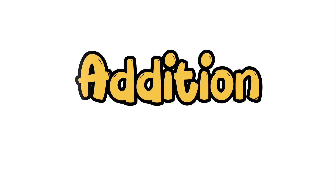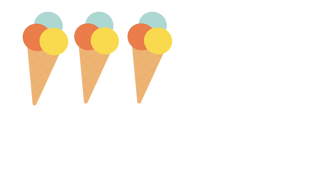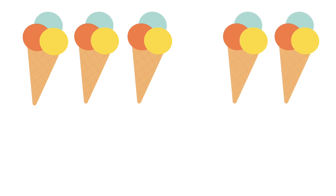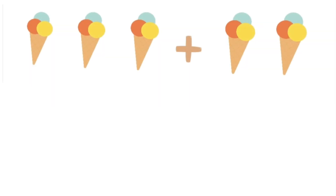What is addition? Have a look at these ice creams. How many are they? Let's count them together: one, two, three — three ice creams. If I gave you some more ice creams, let's count them together: one, two — two more ice creams. If we count them all together: one, two, three, four, five — five ice creams.